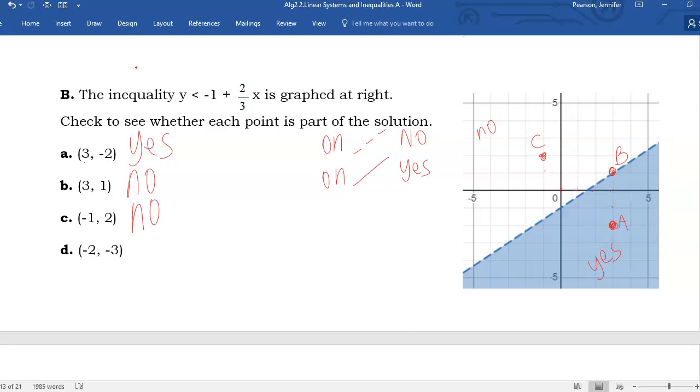And the last one, negative 2, negative 3, 1, 2, 1, 2, 3. He is a yes. What is this, D? Yes. And that's it.